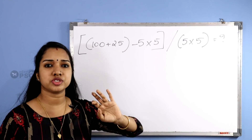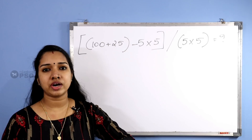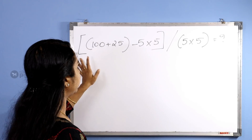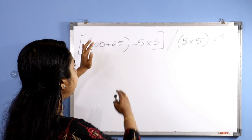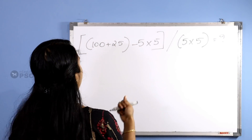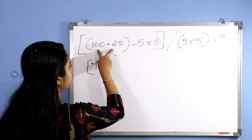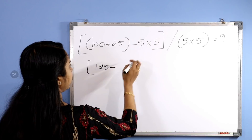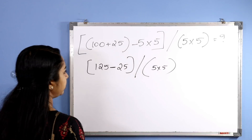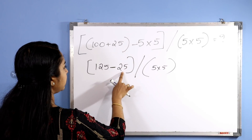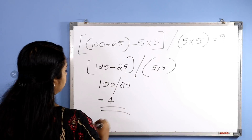This is the rule of BODMAS. We have done a detailed video about BODMAS. If you want to open a bracket, complete the inner bracket first. Opening the bracket gives 125 minus 25, which is 100. Then 100 divided by 25 equals 4. That is the answer.